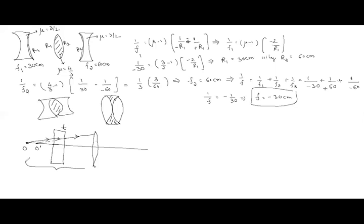Originally the object is at distance 40 centimeters, but for the lens, the object appears shifted from O to O′. If we can find this shift, we can find the image position.